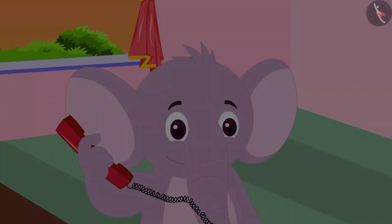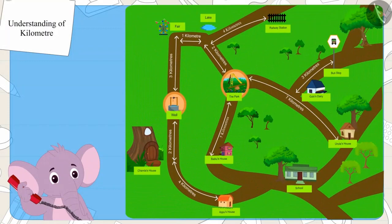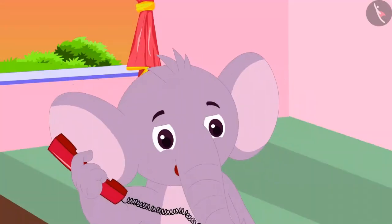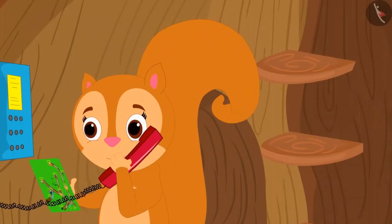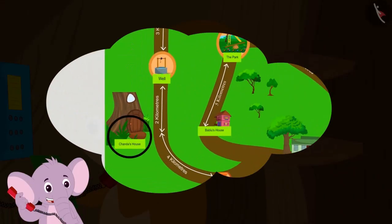Appu asked her to look at the trip map that they were given. Can you spot your house in the map? So now you have to come two kilometers straight from there and then you will reach the well.